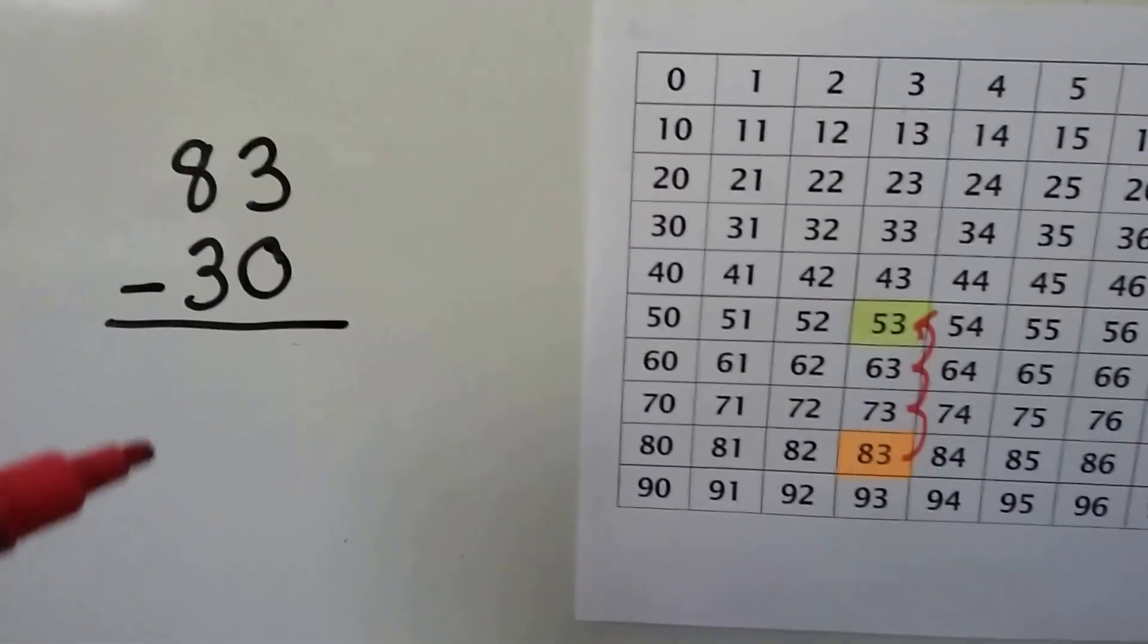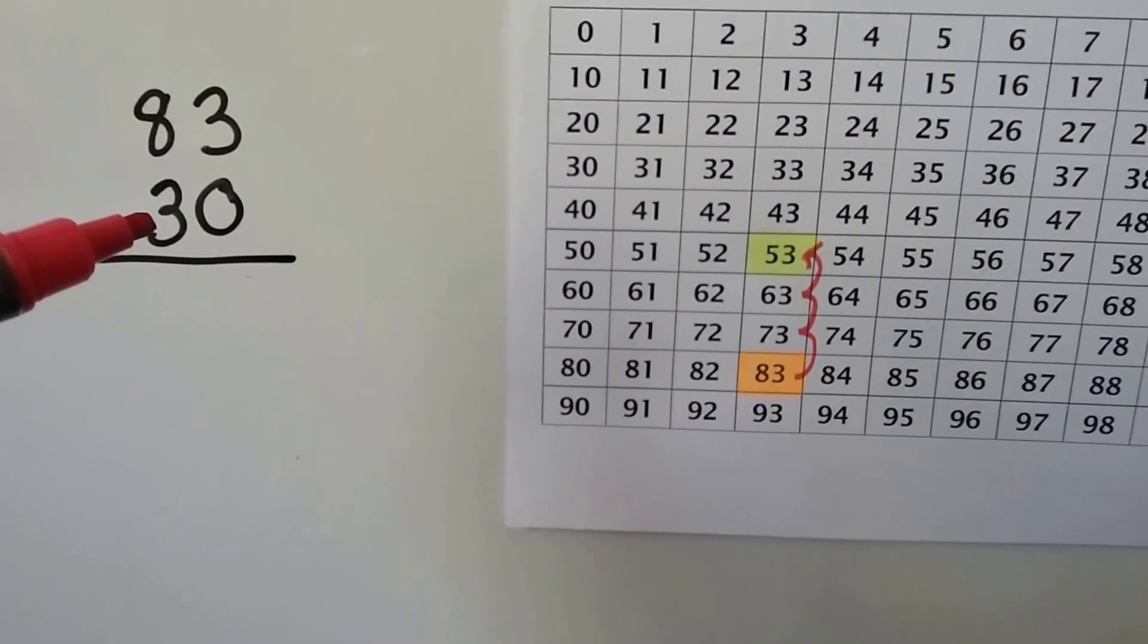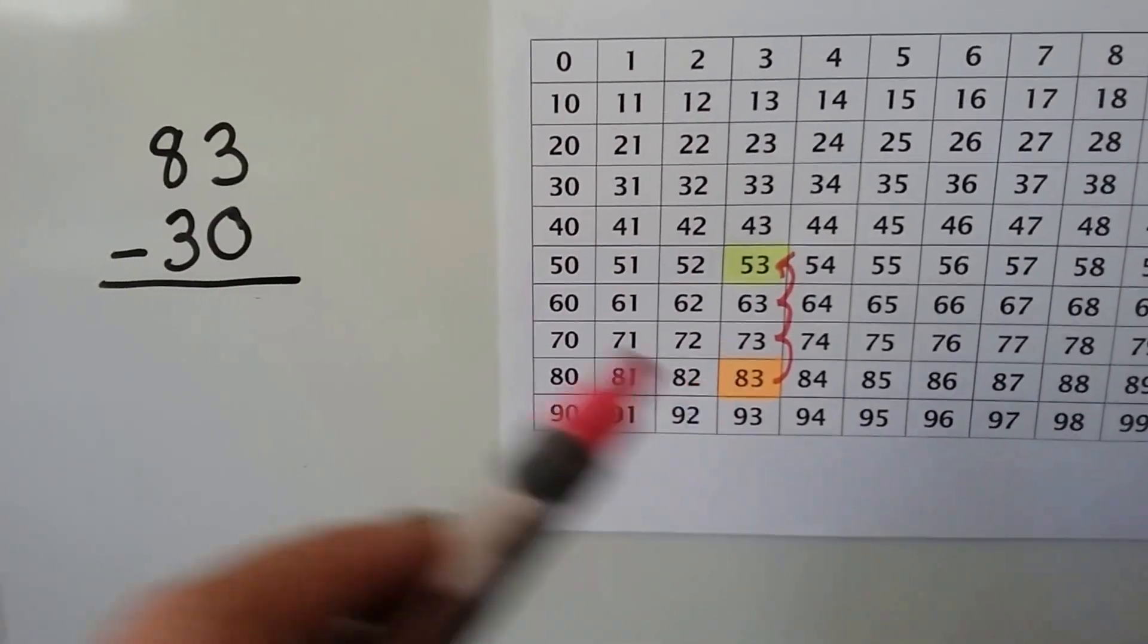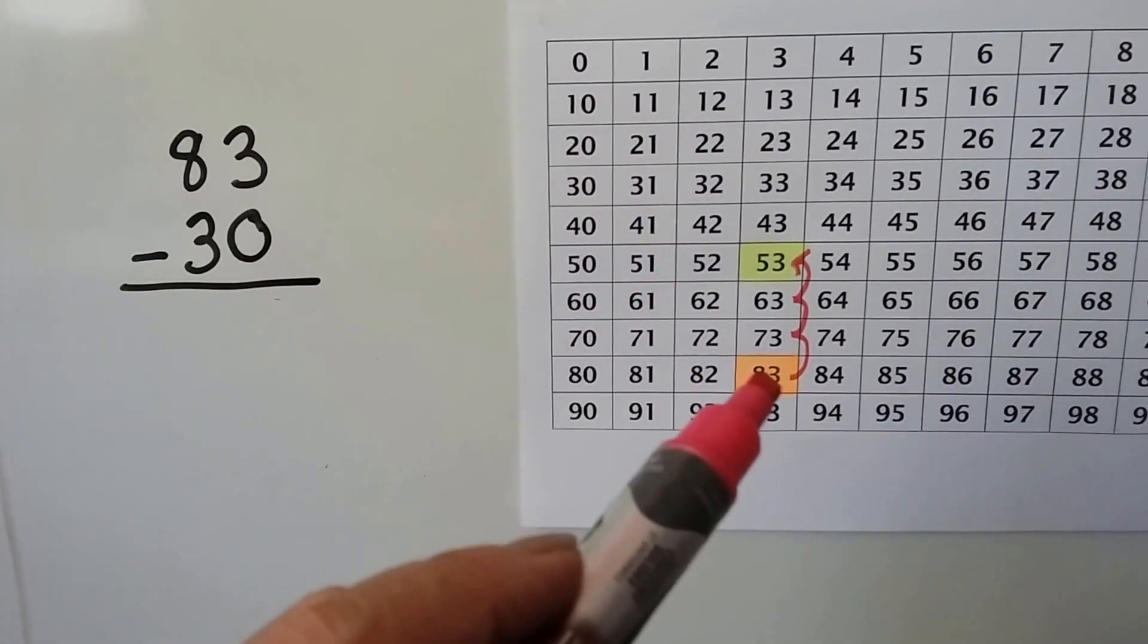For this one, because we're taking away an even amount of tens, just 3 tens, no ones, we can use a hundred chart. We start at the 83 and we hop back 3 rows because each row is 10.